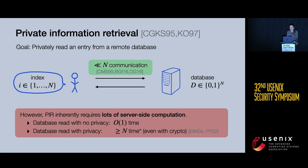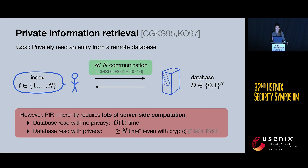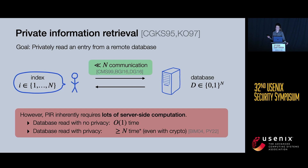Modern PIR has surprisingly low communication, scaling only polylogarithmically with the database size n. However, there's still a big bottleneck in practice: PIR is slow and expensive when it comes to server-side computation. There's a lower bound showing the server needs to do work at least linear in the database size. The intuition is that if the server didn't touch any one location, it would learn the user probably isn't reading there, leaking information about the client's query. So the server does essentially a linear scan over the entire database on each query.